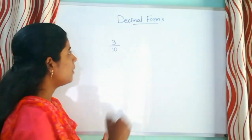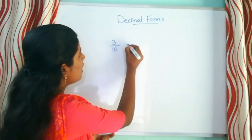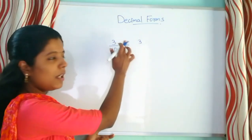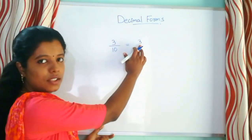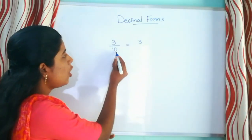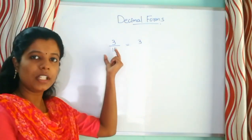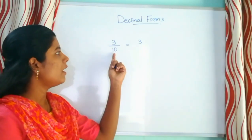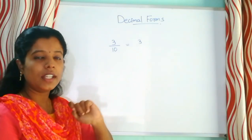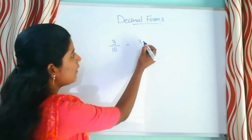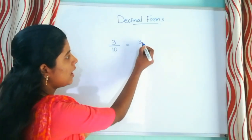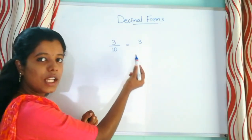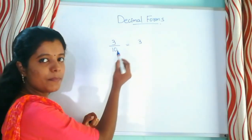If you have a number, we will use the numerator. The numerator is the same as the denominator. If you have a number of 10, you will have a number of 0. Now we have a point here, and we place the point here, and we place how many more points we have to place.